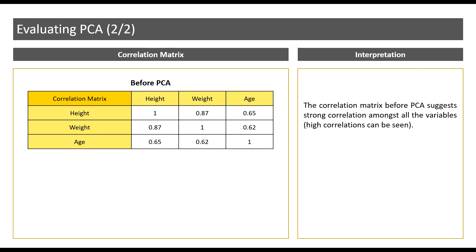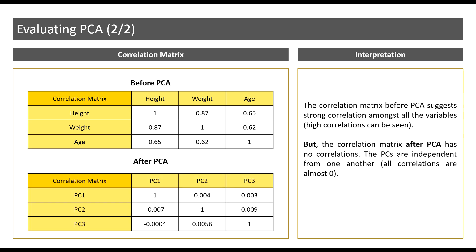Now, if you recall in the previous videos, we saw that the variables were loaded into principal components. Now let us take a look at how these principal components are correlated amongst one another. Below, I have another correlation matrix after PCA.